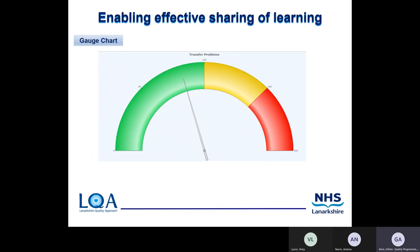Then we have the gauge chart, where you can set your own parameters. For example, we've set 0 to 100 as green — the acceptable number of incidents. From 100 to 150 is amber, meaning we need to keep an eye on it if the gauge is moving in that direction. And 150 plus is shown in red, indicating an increase in reporting that would flag a concern, prompting a more in-depth look at why so many incidents are being recorded.